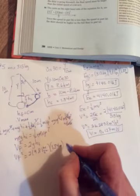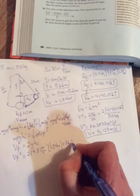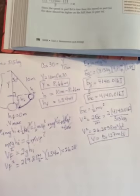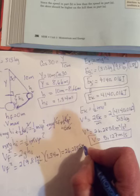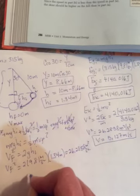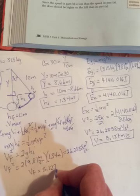And, lo and behold, when you do this for v squared, you get 26.2858 meters squared per second squared. And when you take the square root, you get 5.127.